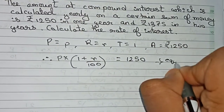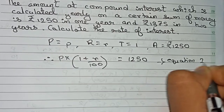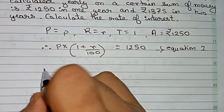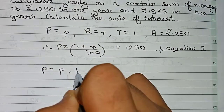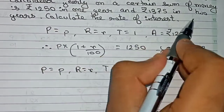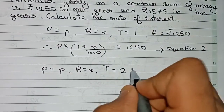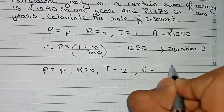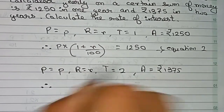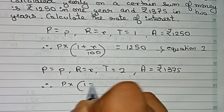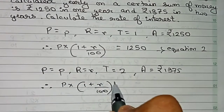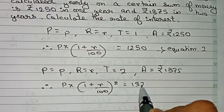Now we frame equation number 2. Principal is P, rate of interest is also unknown R. In this case, time is two years and the amount given is rupees 1375. So the equation becomes: principal into (1 + R/100) to the power 2 equals 1375. This is our equation number 2.